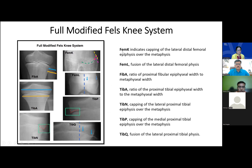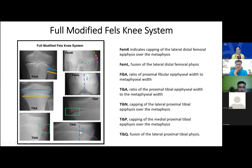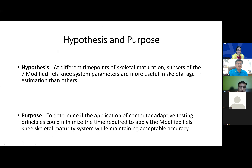The seven parameters measured are: FemK (capping of the lateral distal femoral epiphysis over the metaphysis), FemL (fusion of the lateral distal femoral physis), FibA (ratio of proximal fibular epiphyseal width to metaphyseal width), TibA (ratio of proximal tibial epiphyseal width to metaphyseal width), TibN (capping of the lateral proximal tibial epiphysis over the metaphysis), and TibP (capping of the medial proximal tibial epiphysis). Skeletal maturity is then calculated from these parameters.